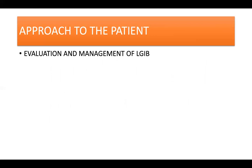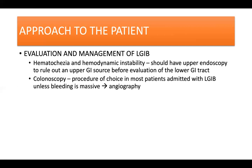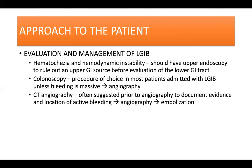In the evaluation and management of lower GI bleeding, patients with hematochezia and hemodynamic instability should have upper endoscopy first to rule out an upper GI source before evaluation of the lower GI tract. Colonoscopy is the procedure of choice in most patients admitted for lower GI bleeding, unless bleeding is too massive, in which case angiography is recommended. CT angiography is often suggested prior to angiography to document evidence and location of active bleeding, after which conventional angiography can be carried out, and when it detects the site of bleeding, embolization can be done to control the bleeding.